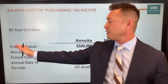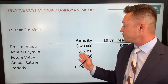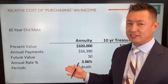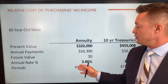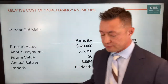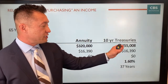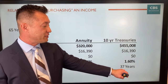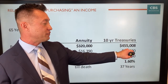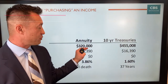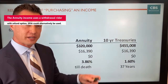If I got a quote for a 65-year-old male — which I did — for $320,000, it would produce $16,390 on an income withdrawal rider for an annuity, and that's guaranteed for life. The 10-year treasury, if we wanted that income for 37 years at 1.6% yield, would require a lump sum of $455,000 versus $320,000 for the annuity to produce that same income.